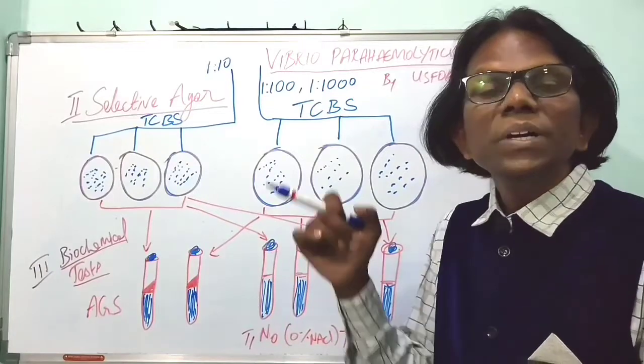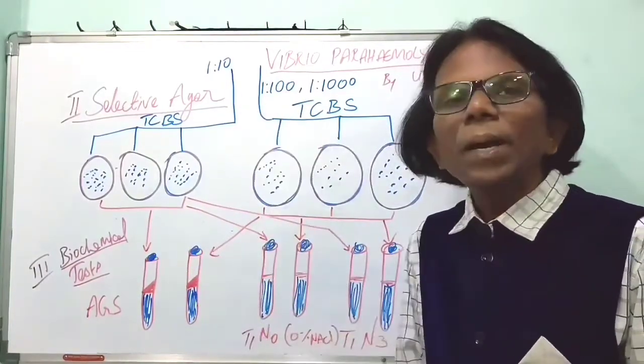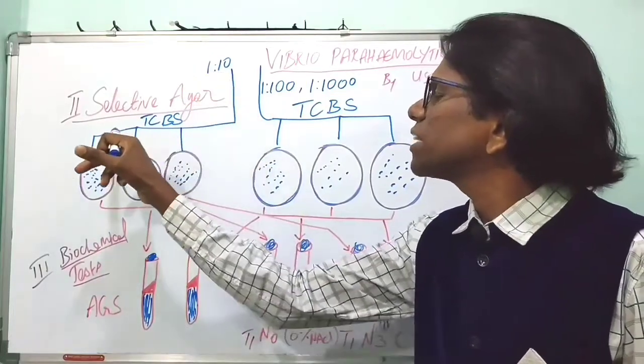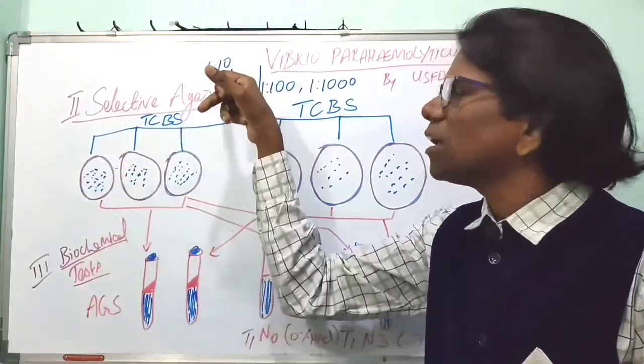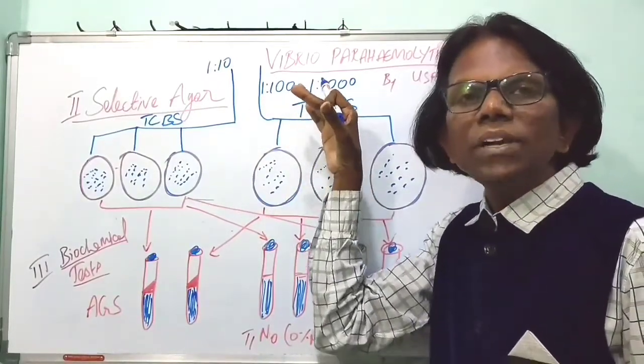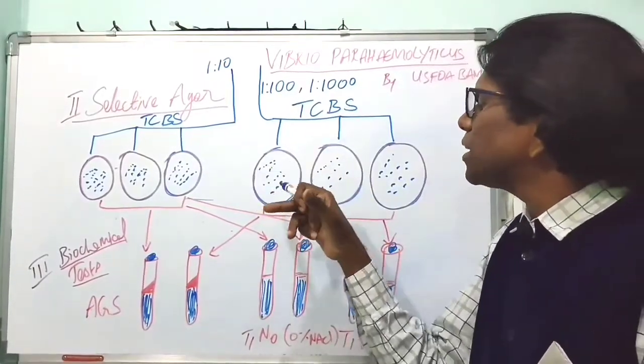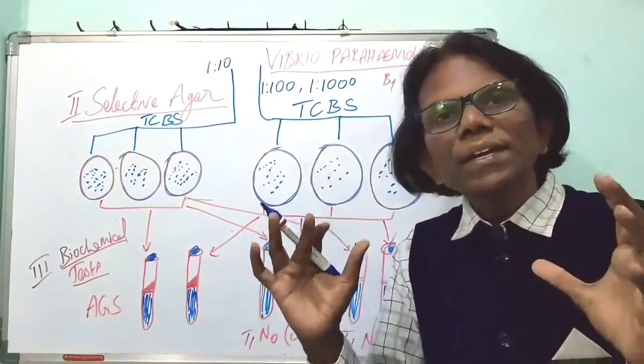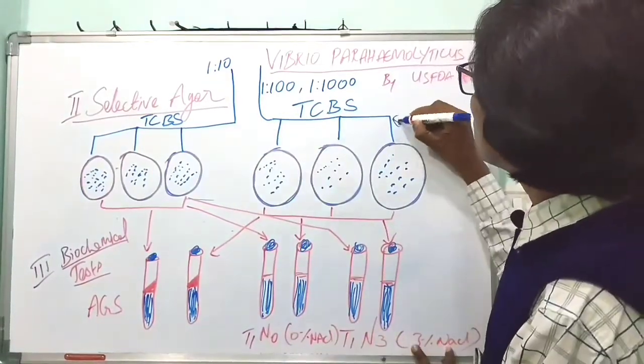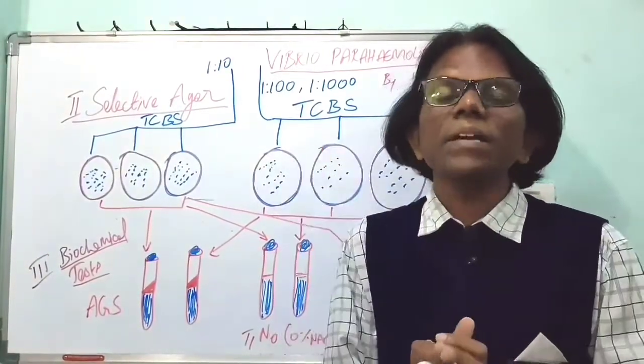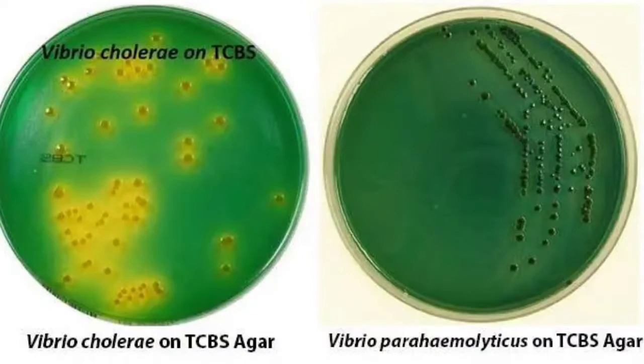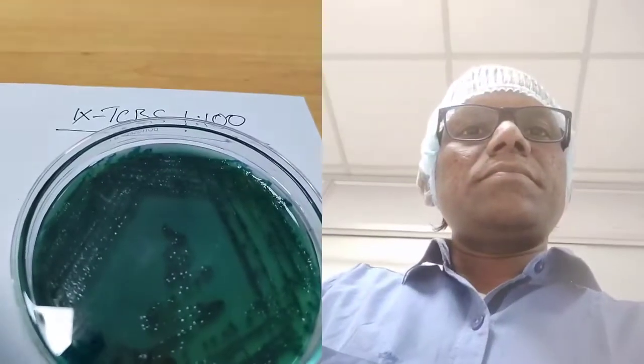Once the TCBS plates are dried, transfer 3 mm loop full of primary enrichment inoculum. Take inoculum from 1 to 10 dilution and streak onto the TCBS plates. Then again, take 1 to 100 dilution and 1 to 1000 dilution of inoculum from primary enrichment medium and transfer to TCBS plates. Incubate at 35 plus or minus 2°C for 18 to 24 hours. After 18 to 24 hours, Vibrio parahaemolyticus will exhibit colonies. The colonies will appear blue or green color with 2 to 3 mm diameter with opaque centers.